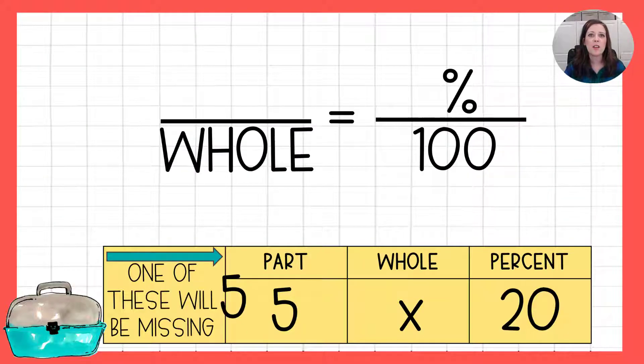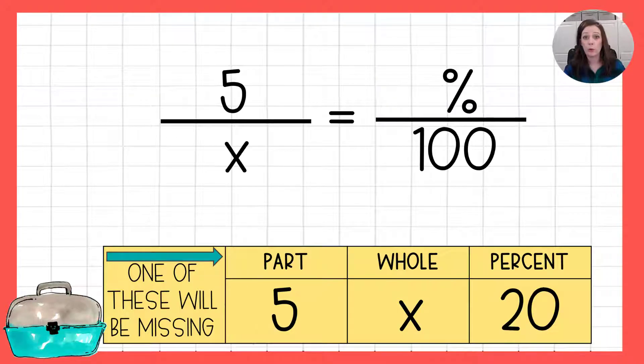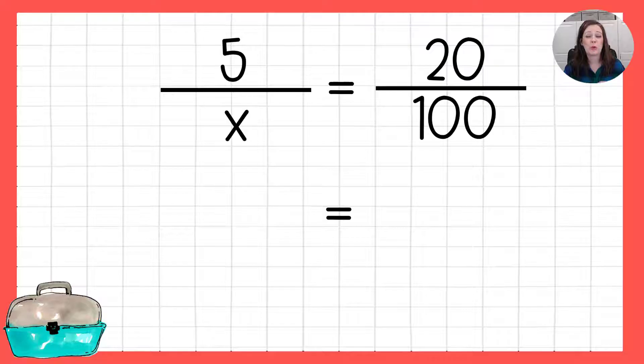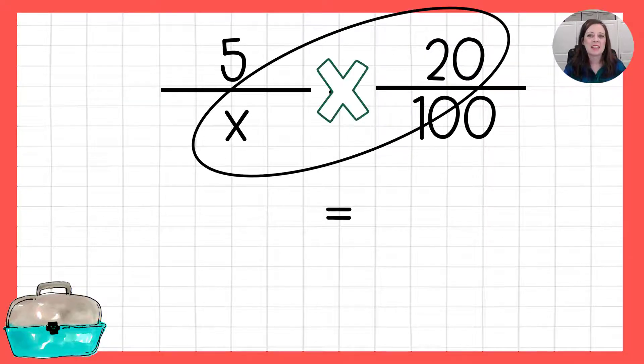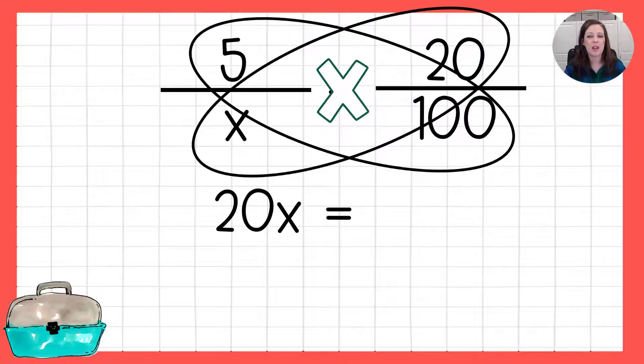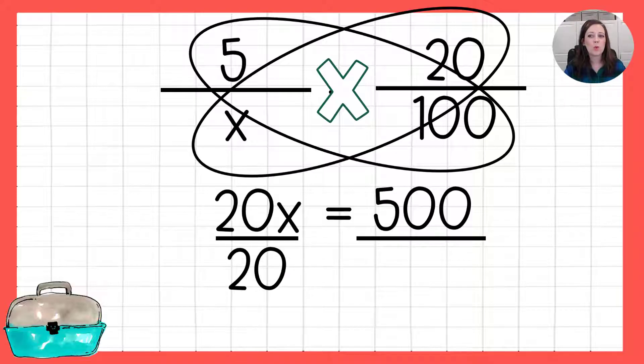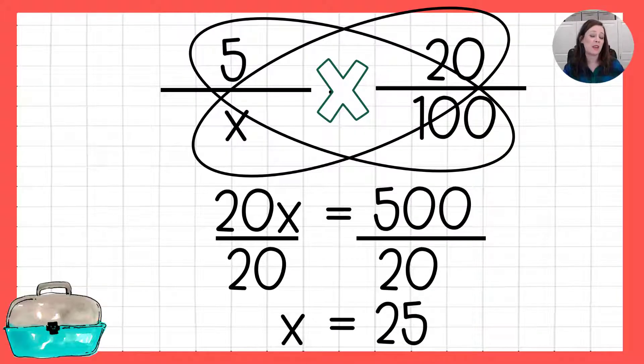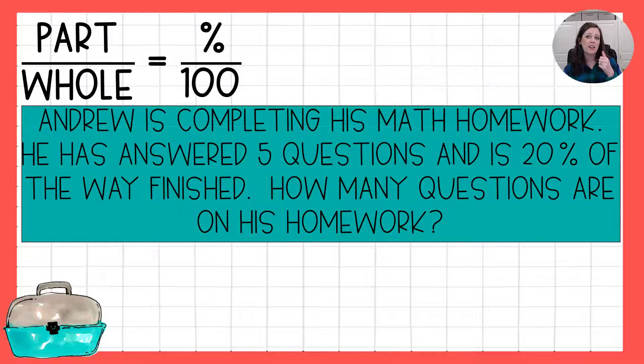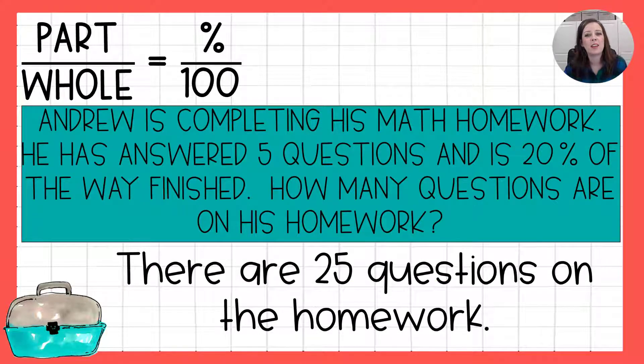So the part is 5. The whole is who knows. The percent is 20. And we're ready to cross multiply again. So 20 times x is 20x. 5 times 100 is 500. Do the inverse to solve this one-step equation. Divide both sides by 20. And we come up with x being 25. Andrew had 25 questions on his homework.